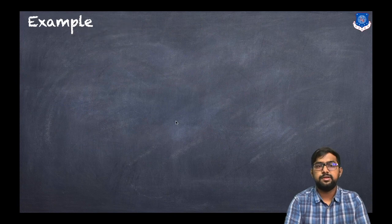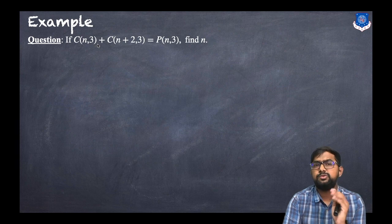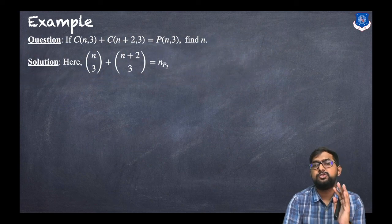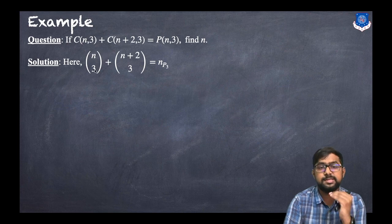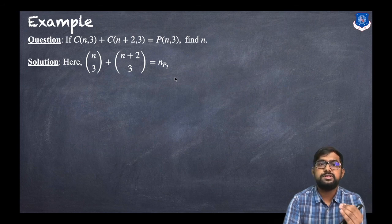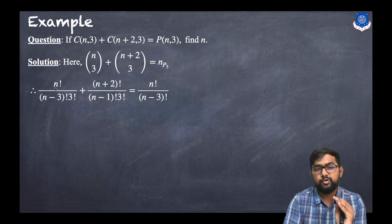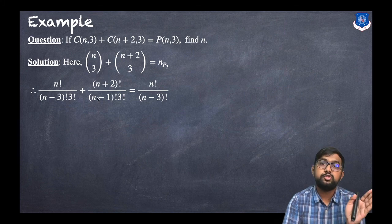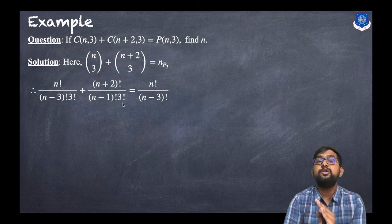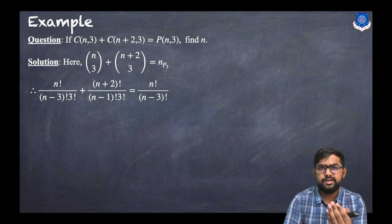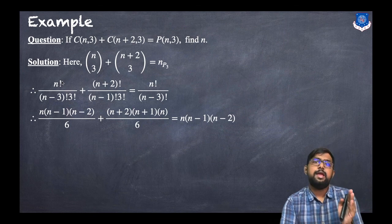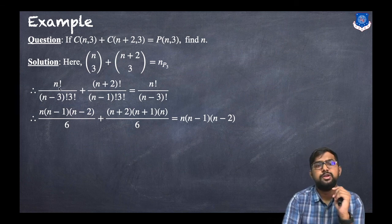Let us discuss an example. Given nC3 + (n+2)C3 = nP3, find n. Writing in formula form: n!/(n−3)!·3! + (n+2)!/(n−1)!·3! = n!/(n−3)!. Expanding n! as n(n−1)(n−2)(n−3)! allows cancellation of (n−3)!, and similarly (n+2)! expands as (n+2)(n+1)(n)(n−1)!, allowing cancellation of (n−1)!. With 3! = 6, we get [n(n−1)(n−2) + (n+2)(n+1)(n)] / 6 on the left.